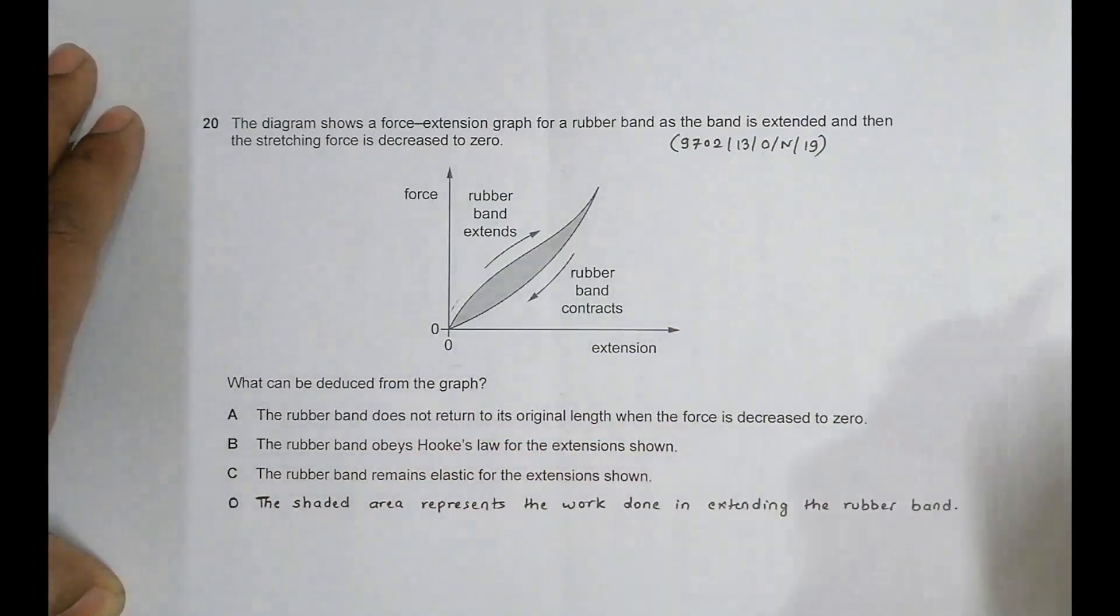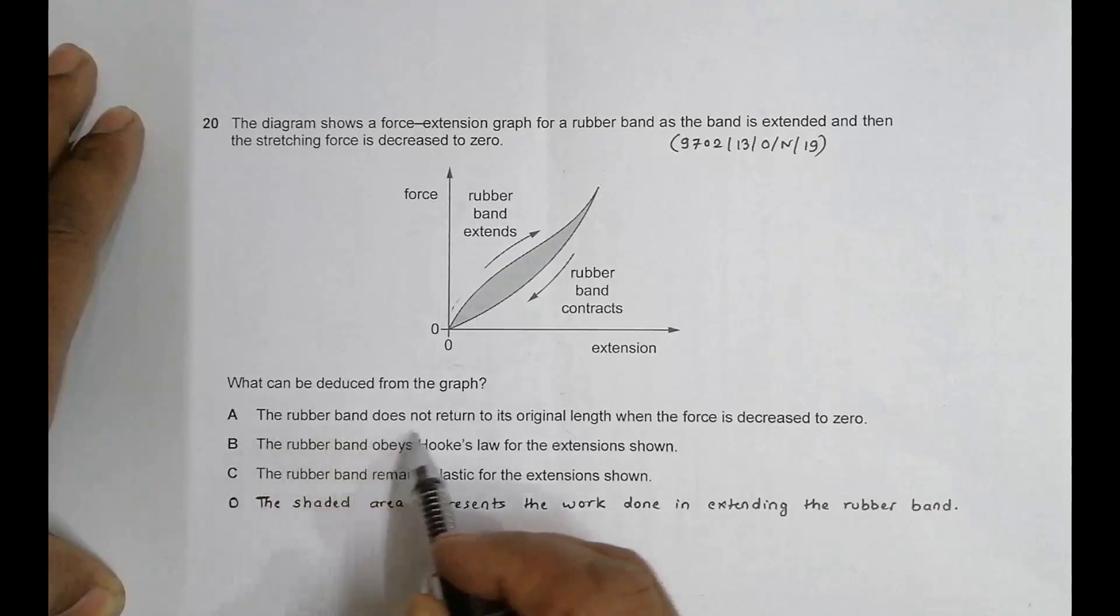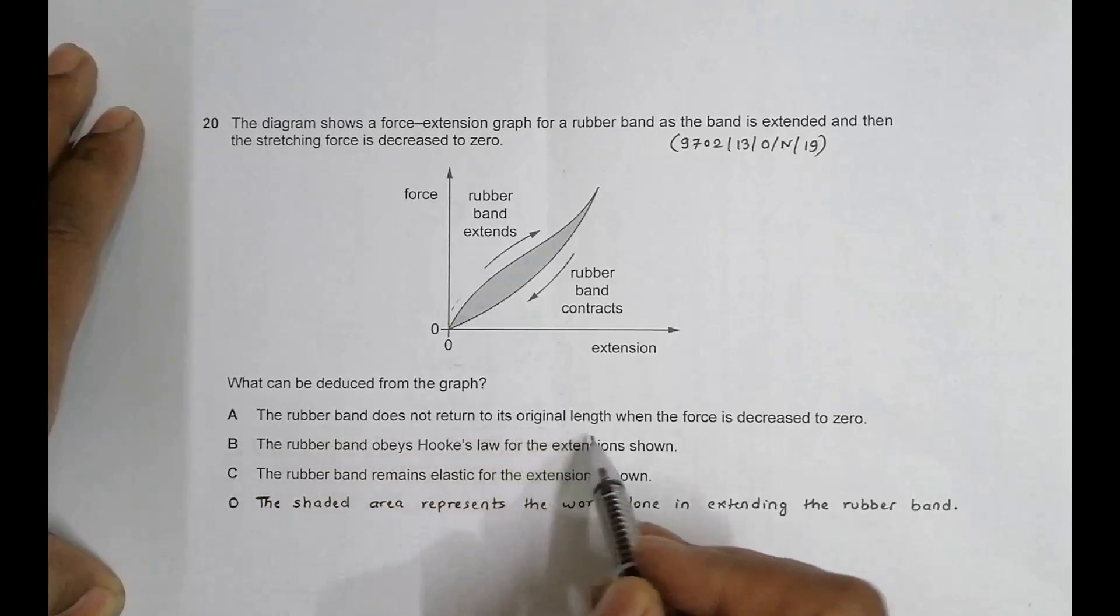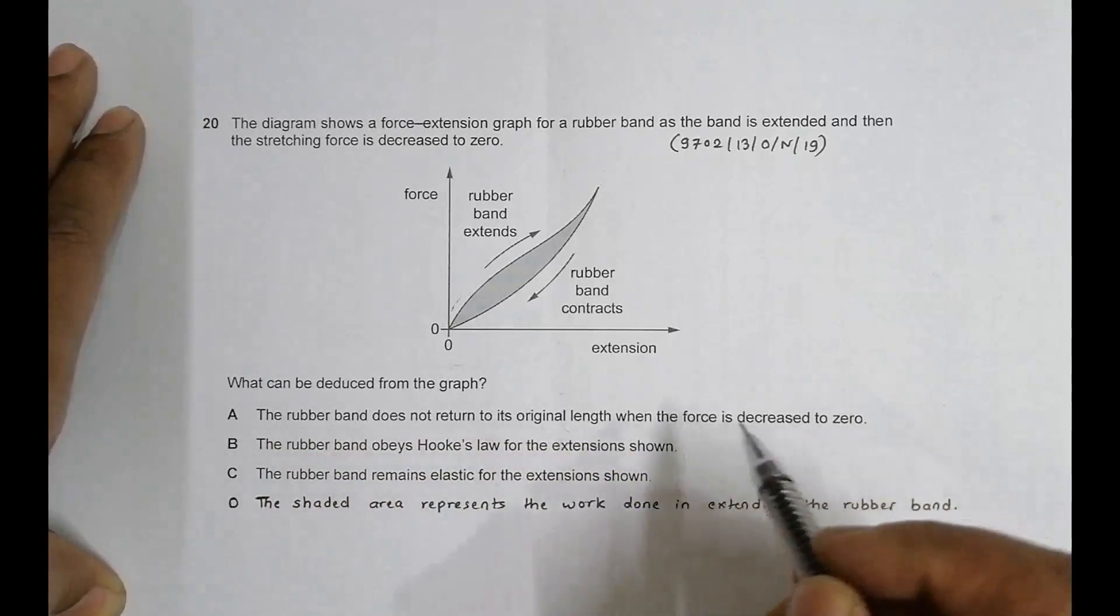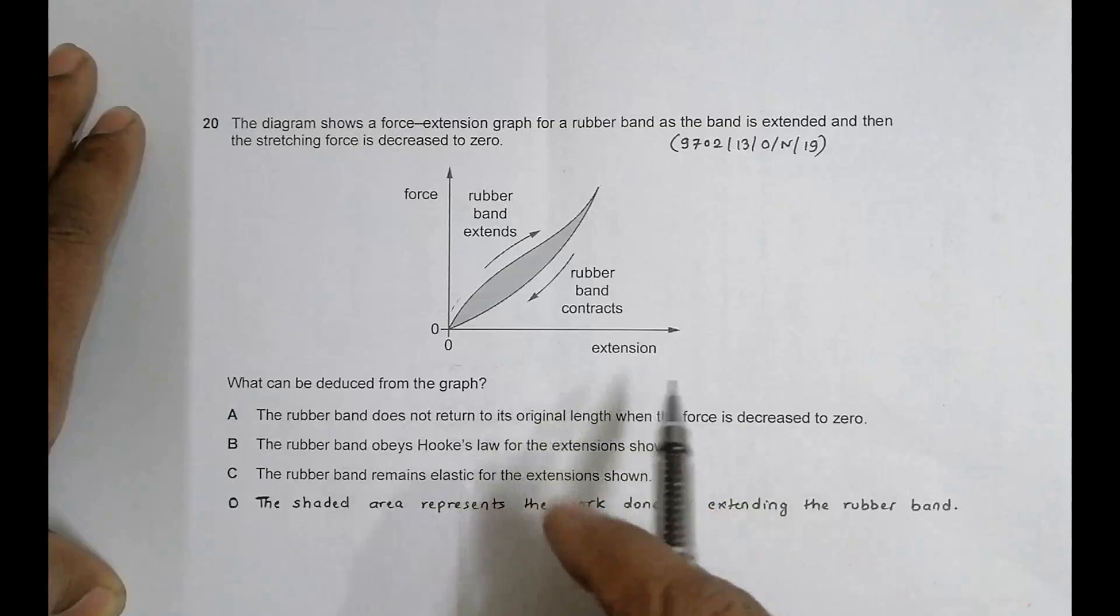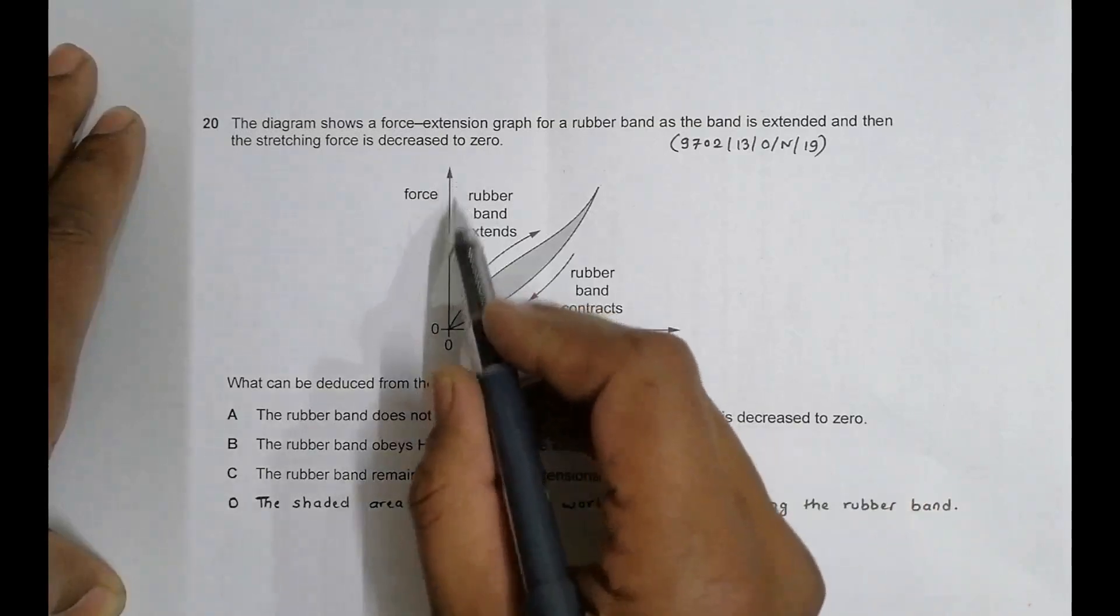What can we deduce from the graph? We have to observe the graph carefully and see what can be deduced. The first point says the rubber band does not return to its original length when the force is reduced to zero. But this is not true.